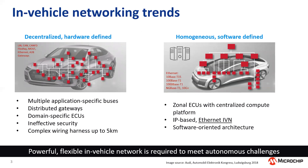In-vehicle networking trends: today vehicles are very much decentralized and hardware defined, consisting of many application-specific buses — maybe 20 or even 30 at any one time — all connected together by a series of distributed gateways. ECUs are very much domain specific and security is relatively ineffective. Many of these buses and architectures were not really designed at a time where security was that prominent for vehicles. Last but not least, wiring is very complex and there's lots of it.